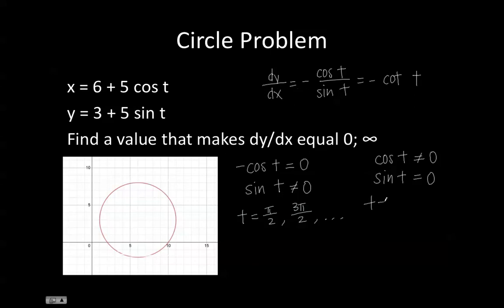The values of t that make sine t equal to 0 are over here and over here. So in this case, we would have 0, pi, 2 pi, and so on.